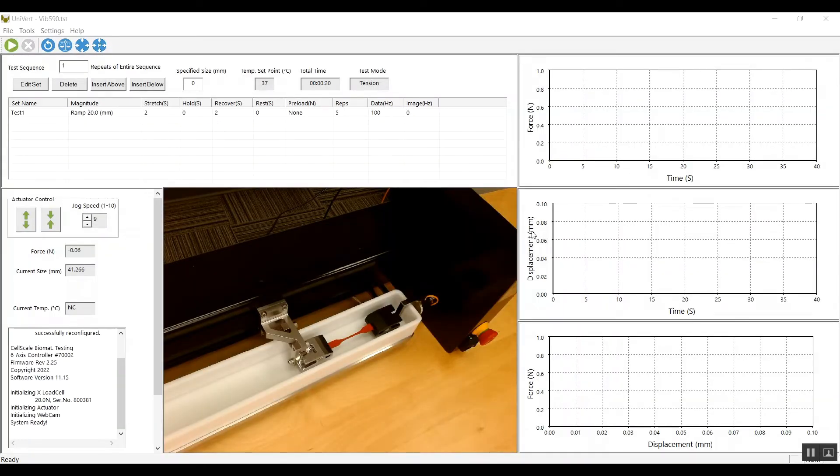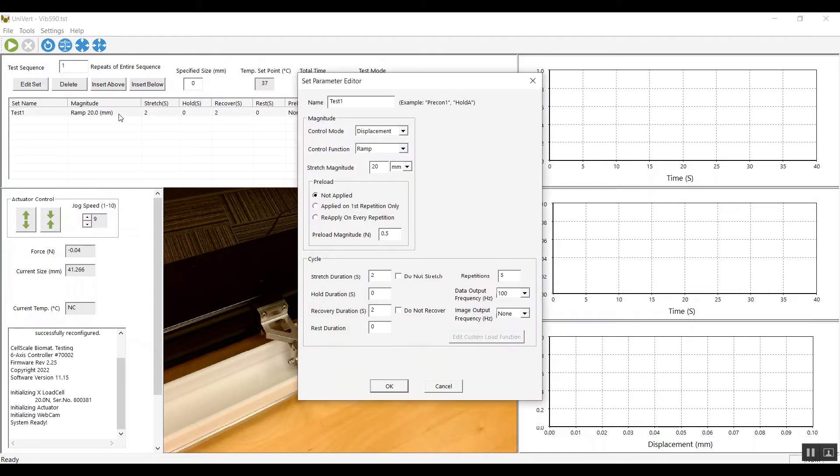I'm not going to do a full overview of the UniVert software in this video. It does many different things but for now I've just set up a simple tension test in a horizontal orientation. On the top here, I'll pull this open just to show you where I've specified my test protocols as a displacement controlled test with a ramp profile.